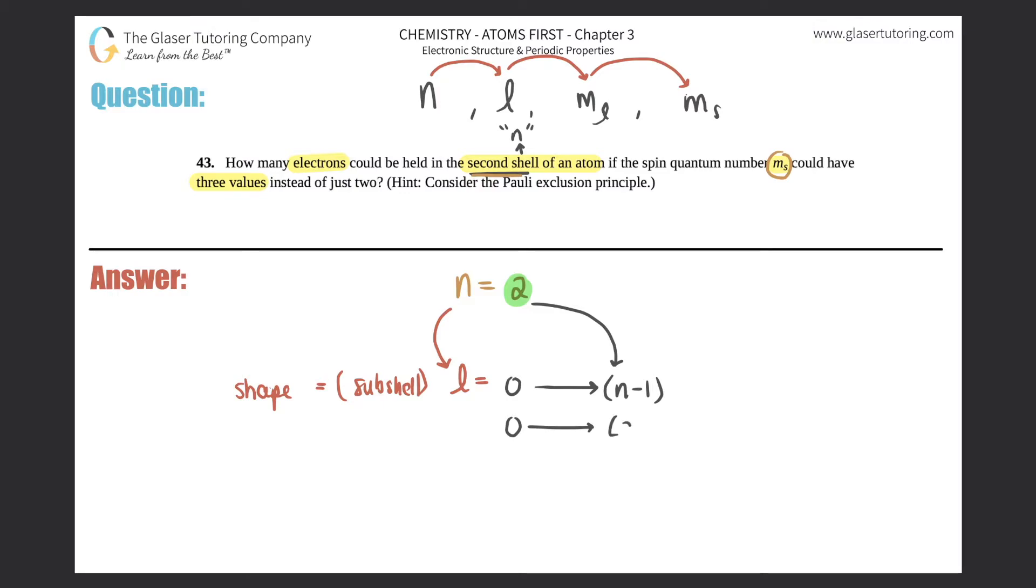So this would be zero up until just one. How many different numbers are from zero to one? Just two, right? The l could either be a zero or it could be a one. So I have two different l values for my second shell. Remember, a zero always represents an s subshell, a one will always represent a p subshell.